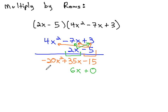2x times negative 7x is negative 14x squared. 2x times 4x squared is positive 8x cubed.